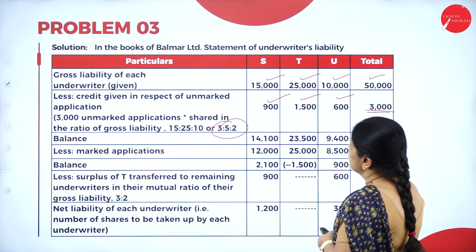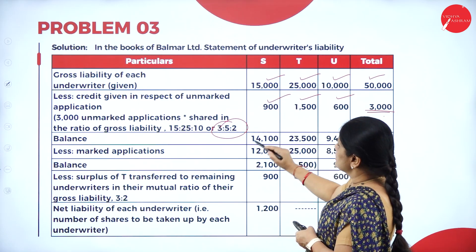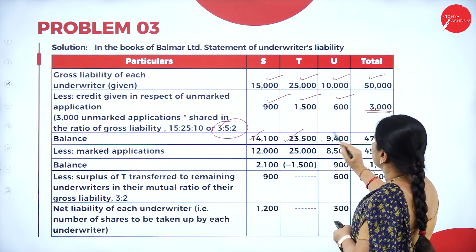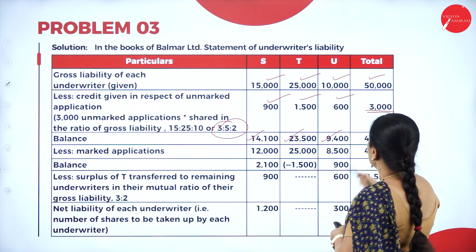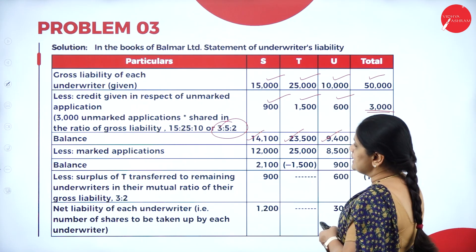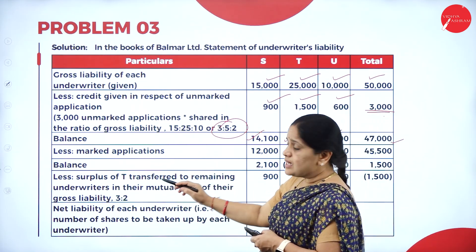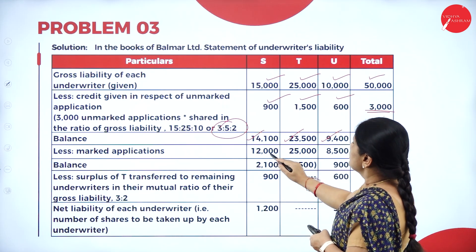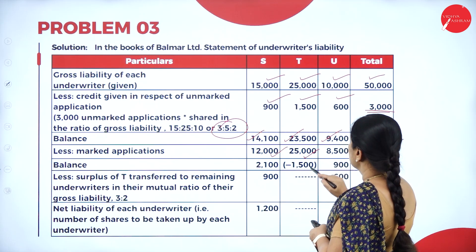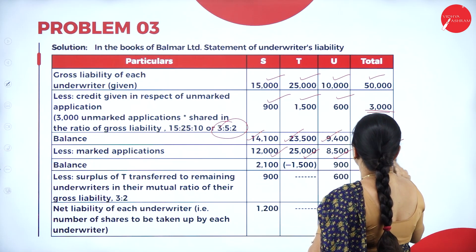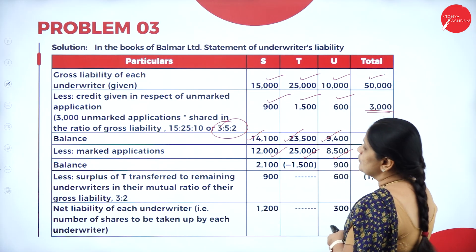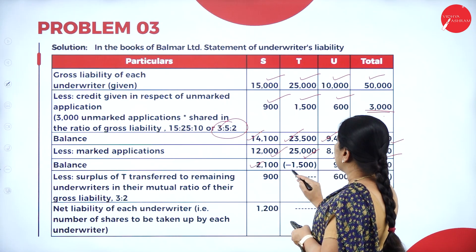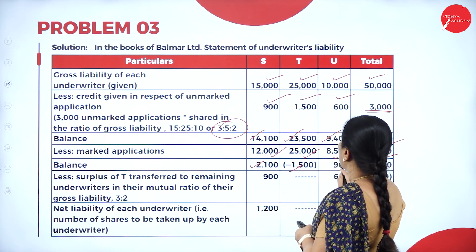Subtracting: 15,000 minus 900 gives 14,100; then 23,500 and 9,400. Total comes to 47,000. From this, we deduct the marked applications: 12,000, 25,000 and 8,500. Total marked is 45,000. The balance is 2,100, minus 1,500 and 900.